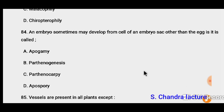Question 84: An embryo that develops from cells of an embryo sac other than the egg. This embryo forms without meiosis and without the egg cell — it develops from other cells of the embryo sac, meaning fertilization has not occurred. Such a condition is called apogamy. Definition: apogamy is the reproduction without the fusion of gametes, usually without meiosis.